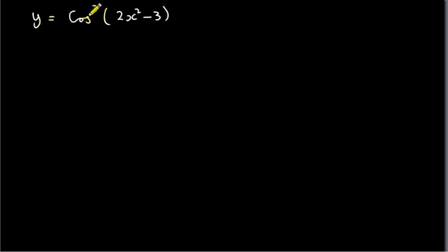Suppose we have the function y equals cos cubed of 2x squared minus 3, and we want to find dy dx. First of all, what does this actually mean? This means cos of 2x squared minus 3 all to the power of 3.